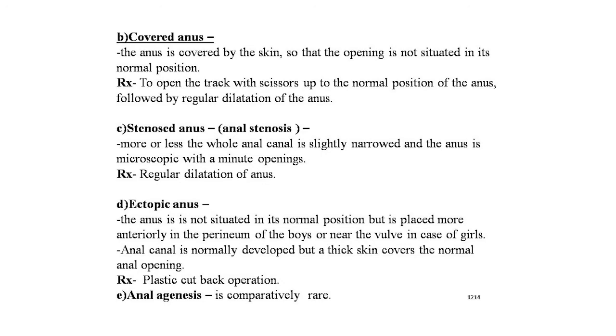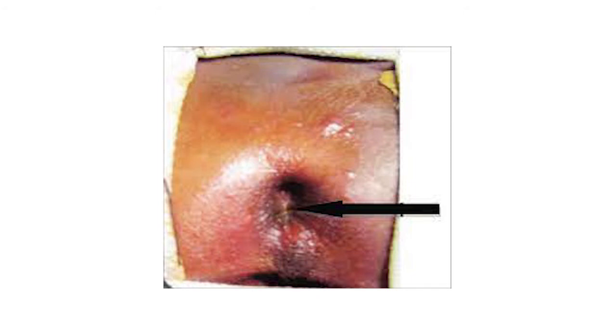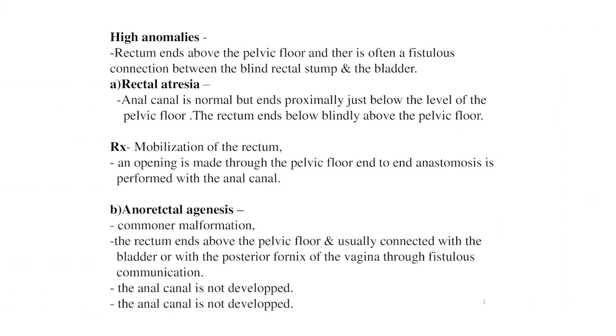You can see pictures of the anal canal covered by the membrane with a track running forward to the perineal raphe — this track is called the bucket handle. This is the midline fistula seen in this image. The next picture shows the stenosed anus, and the following picture shows the ectopic anus situated anteriorly — in males it opens into the perineum, and in females it opens into the vulva or, very rarely, the vagina.